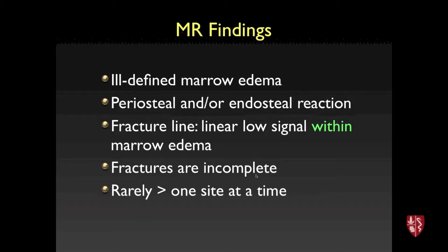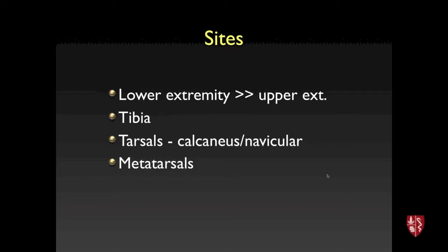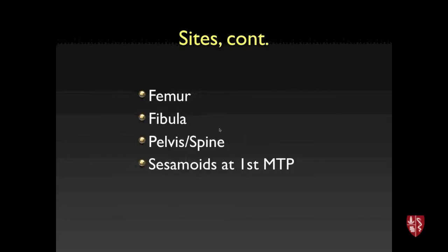These fractures are typically incomplete; some higher-risk fractures can progress to complete fractures if not detected early. They are almost always treated conservatively and will heal with rest. They tend not to occur at multiple sites simultaneously — multifocal abnormalities should raise suspicion for an alternative diagnosis. Common sites in decreasing frequency include tibia, foot (calcaneus, navicular, metatarsals), femur, fibula, pelvis, spine, and sesamoids.